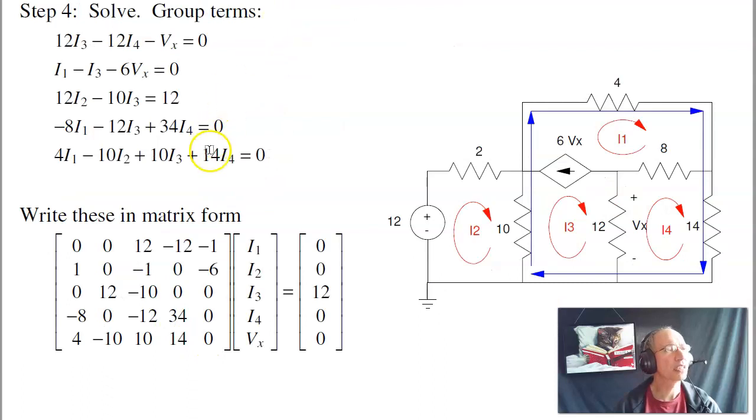One last note, and then we'll call this video quit. The matrix, the way this matrix corresponds to these equations, each column, first column is times I1, second column is times I2. So what I like doing is putting a note to myself. I1, I2, I3, I4, Vx for the columns. And then this first equation is, there is no I1, there is no I2. I've got 12I3 minus 12I4 minus 1Vx is zero. Second equation, I1 minus 1I3 minus 6Vx, the last term, equals zero, and so on.